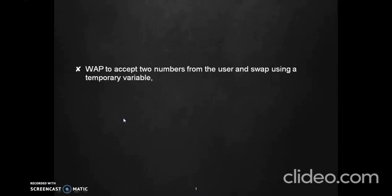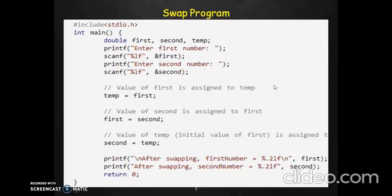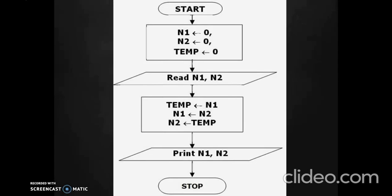Now let us look at an algorithm and corresponding program to swap the values of two numbers. There are two cases: the first is swapping using a temporary variable and the second is swapping without using a temporary variable. For the first case, we require three variables: n1, n2, and a temporary variable temp. You ask the user to enter two values for n1 and n2. From here is where the actual swapping algorithm begins: store the value of n1 into the temporary variable, then move the value of n2 into n1.